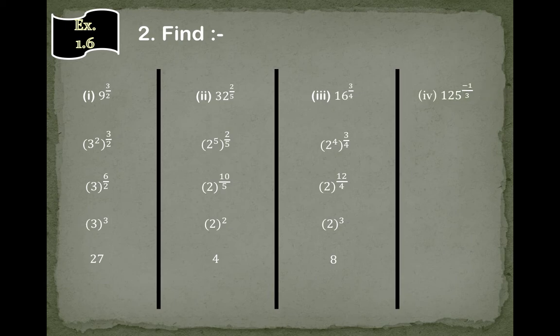The fourth question is 125 power minus 1 upon 3. Our power is 3, so the base power will be 3. Since 5 power 3 equals 125, the two powers multiply and equal minus 3 upon 3. If we divide it, the answer is 5 power minus 1. We can write this as 1 upon 5.